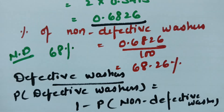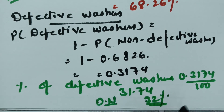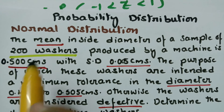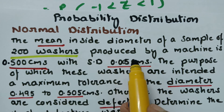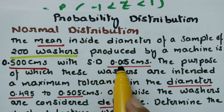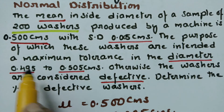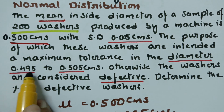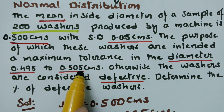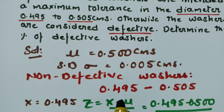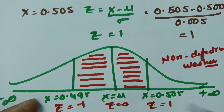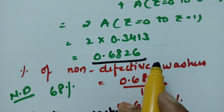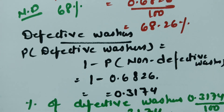So 32% defective washers and 68% non-defective. The mean diameter of the sample of 200 washers is 0.500 and standard deviation is 0.005. If the washers maintain the maximum tolerance between 0.495 to 0.505 they are non-defective, otherwise they are defective. The probability of non-defective washers is 0.6826, giving 68%, and defective washers is 32%. Thank you so much for watching and staying till the end.